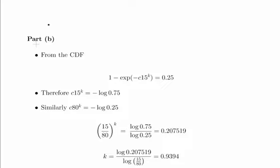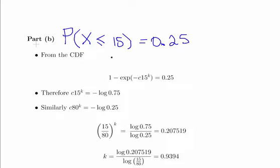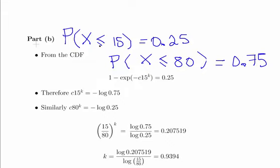Moving to part B, earlier we were told that the probability of X less than or equal to 15 is 0.25, and the other quartile was 80, the third quartile, and the probability of that is 0.75. So this is Q1 and Q3, 15 and 80.